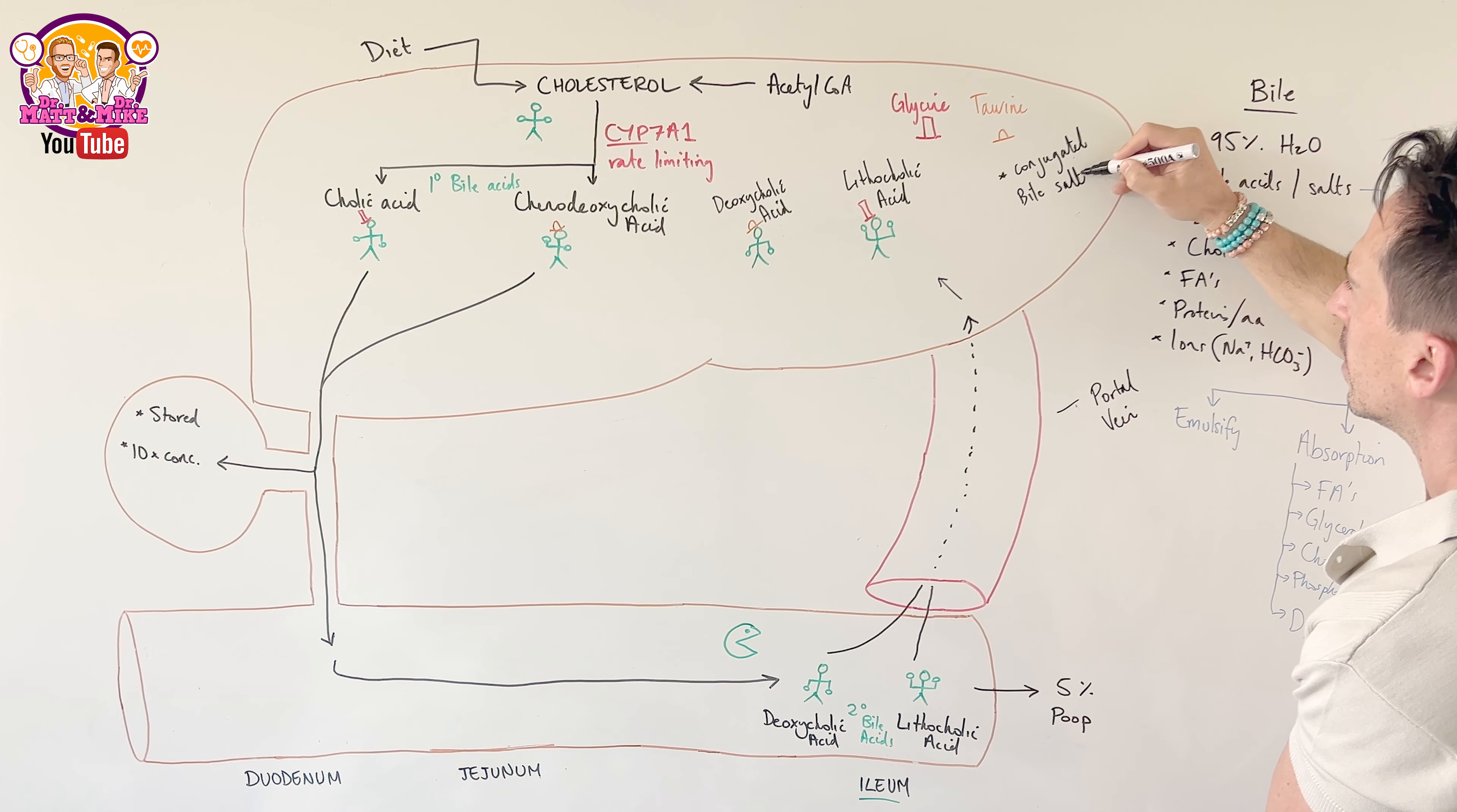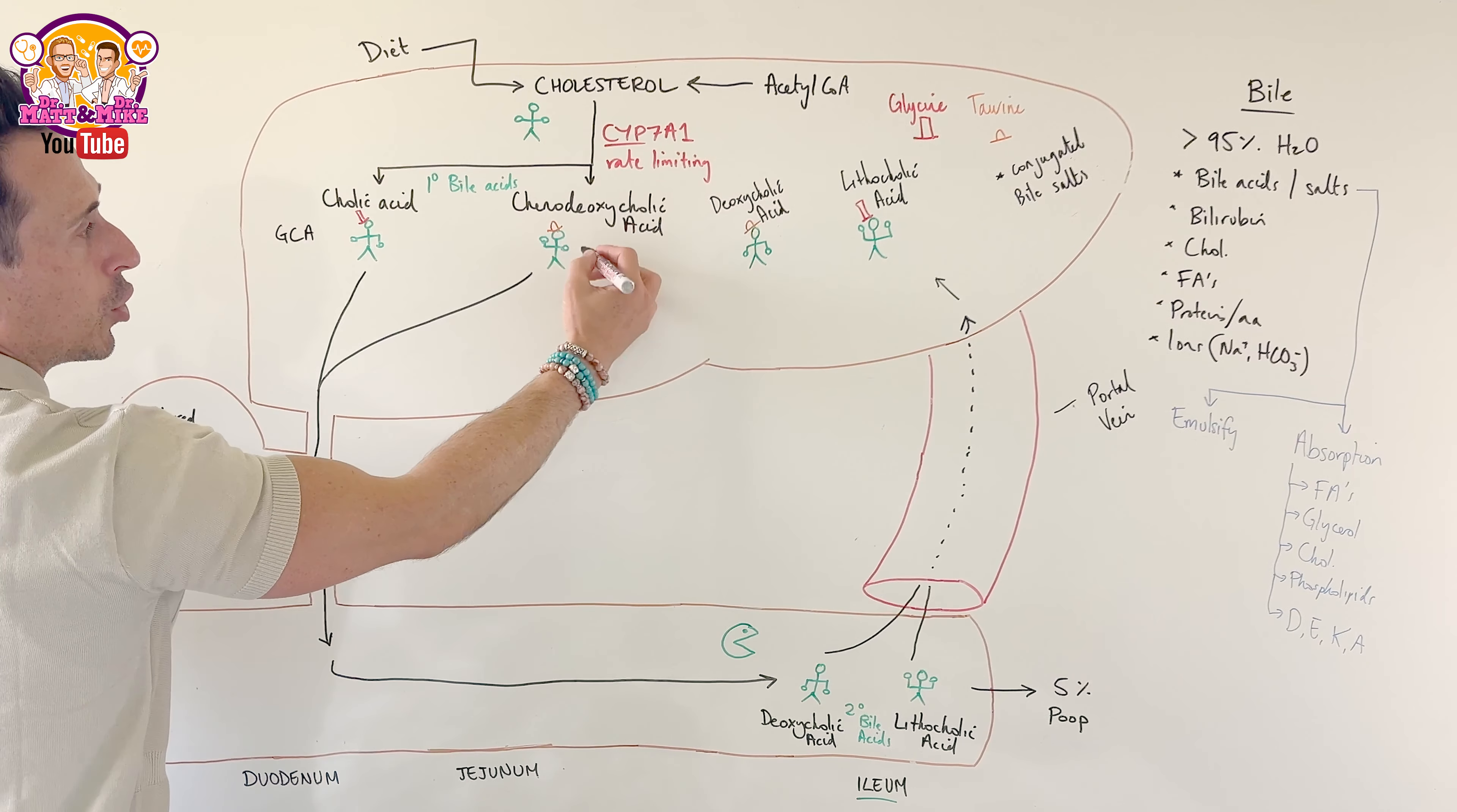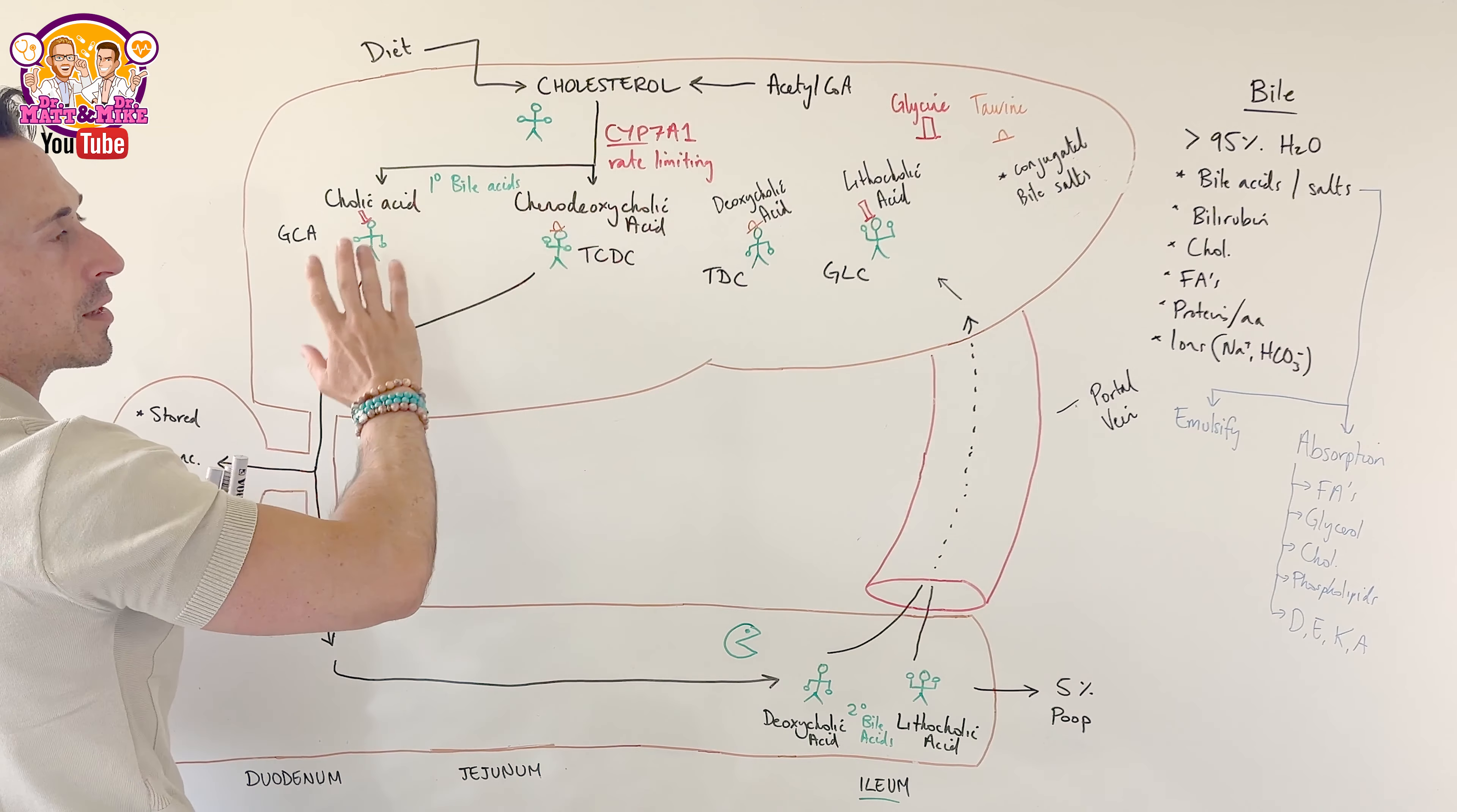What have we just created? We've now created conjugated bile salts. And what are these bile salts called? If it's got the taurine, taurochenodeoxycholic acid, taurodeoxycholic acid. And this one with glycine, glycolithocholic acid or cholic salt. But effectively, they are now bile salts. What is the point of putting these hats on? We know amino acids are quite negatively charged. That means they love water, which means we have now just created, where are they going to go?